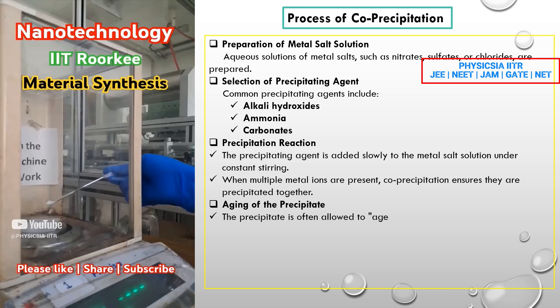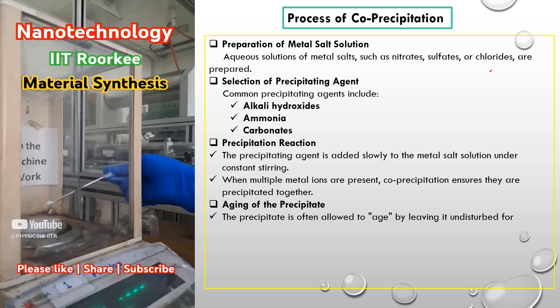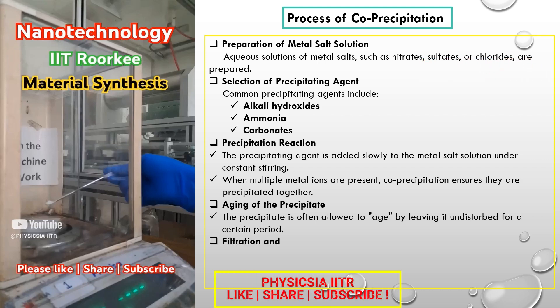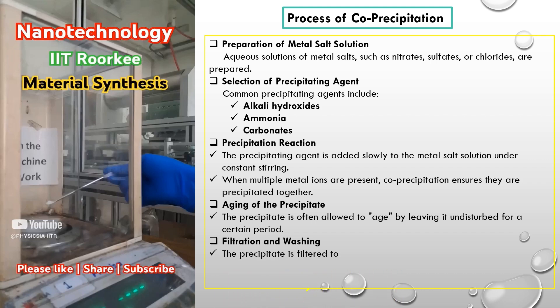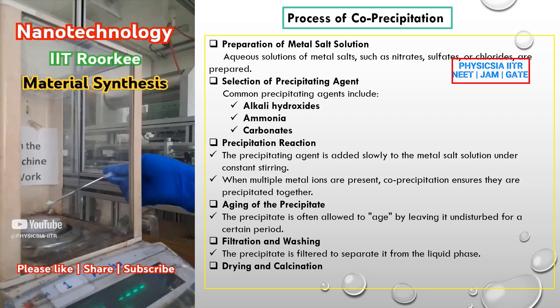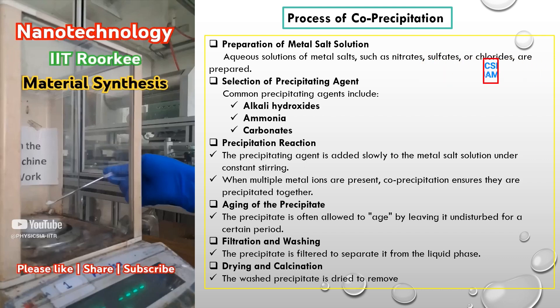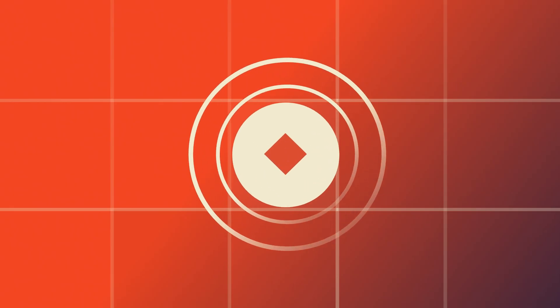Step 4: Aging of the Precipitate — the precipitate is often allowed to age by leaving it undisturbed for a certain period. Step 5: Filtration and Washing — the precipitate is filtered to separate it from the liquid phase. Step 6: Drying and Calcination — the washed precipitate is dried to remove moisture.